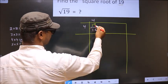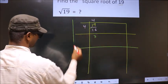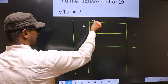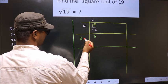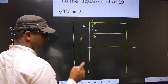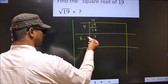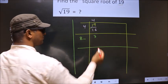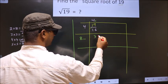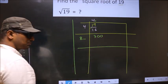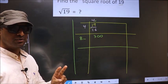Now you subtract. 19 minus 16 is 3. Now, when we write a number here, this number will be smaller than the remainder. In normal division we put a decimal and take one zero, but while finding the square root we should take two zeros. It's a rule — remember that.